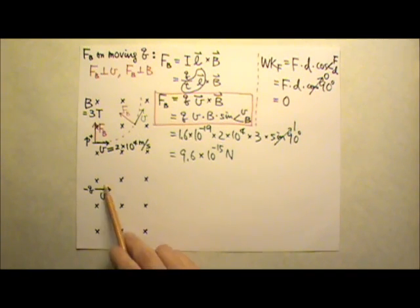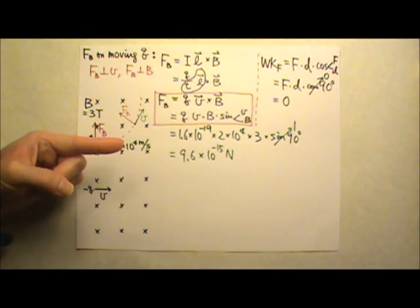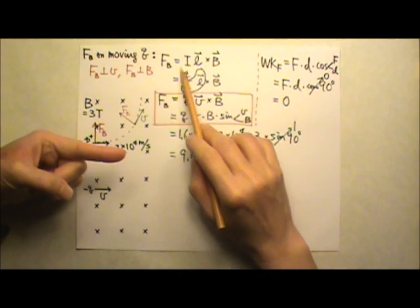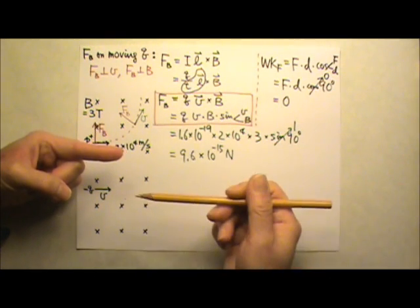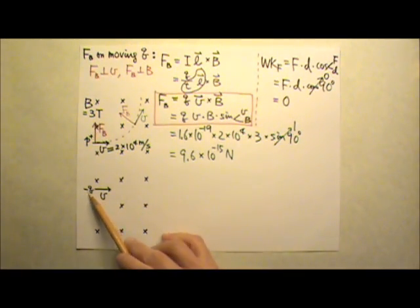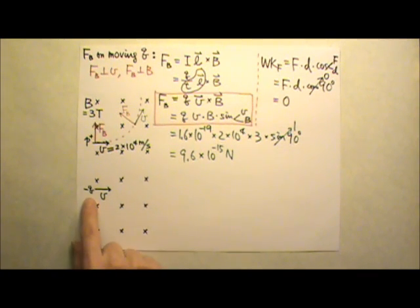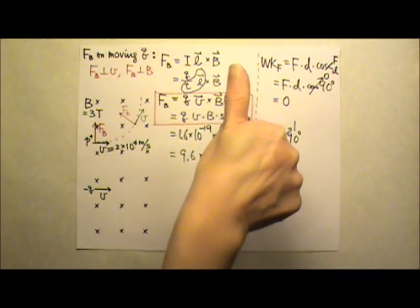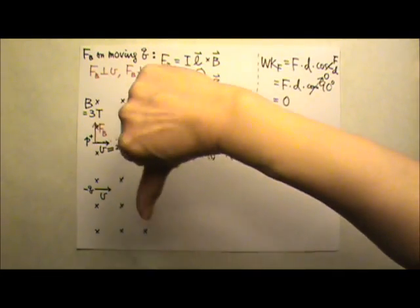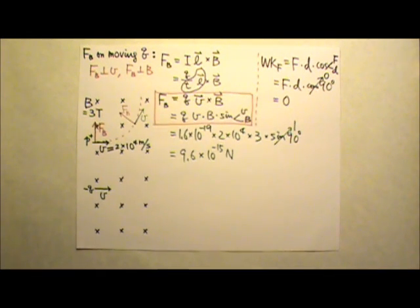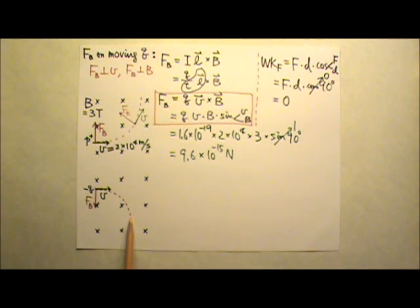What if the charge is negative? If a negative charge moves in this direction, the positive charge flow — the electric current — is in the opposite direction. Therefore, the magnetic force on the negative charge is in the opposite direction compared to a positive charge. So for a negative moving charge, we do V cross B and then flip the thumb to get the direction of the magnetic force. The negative charge would curve downward in circular motion.